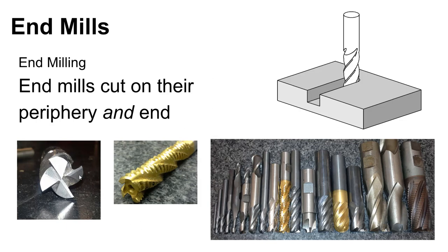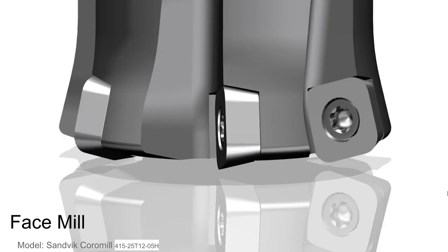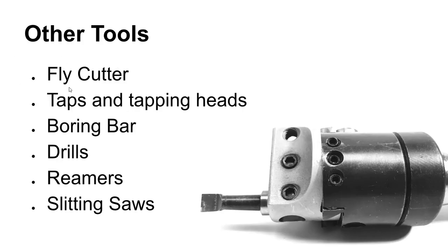The end of an end mill is not exactly flat — it dishes in slightly rather than being perfectly flat. There are also face mills, designed to produce large flat surfaces. This face mill has an angled lead-in so you can thin the chips as you travel in one direction; a flat face moving straight into the material produces thicker chips. Other tools to know: fly cutters, taps and tapping heads, boring heads with boring bars for boring operations, drills, reamers, and slitting saws.